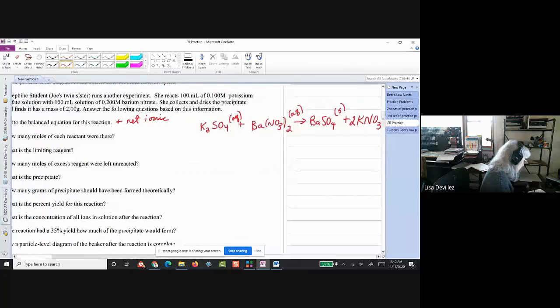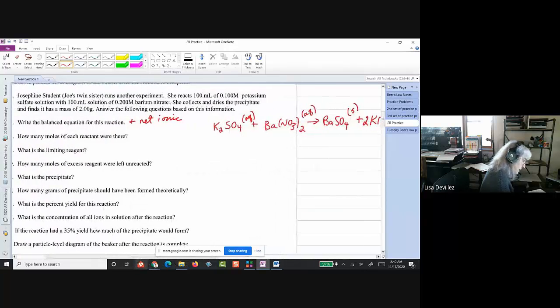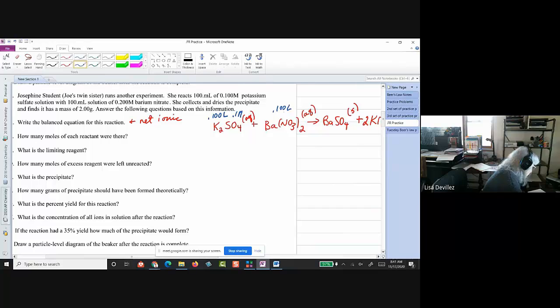All right, and it wants to know, has a lot of stuff with calculations. So we're going to, let's put in our, what it gives us. We have 100 milliliters, so 0.1 liters of 0.1 molarity is the potassium sulfate, and I have 0.1 liters of 0.2 molar barium nitrate.